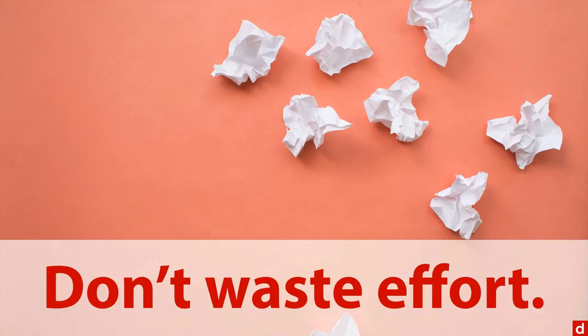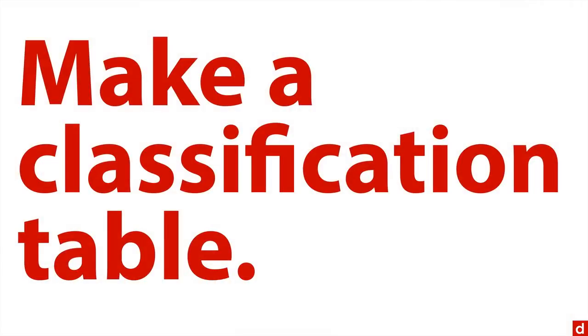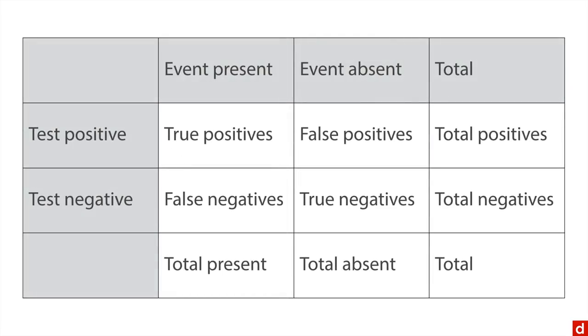One way of doing this in a very quantitative fashion is to make a classification table. So what that looks like is this: you talk about, for instance, positive results, negative results. And in fact, let's start by looking at the top here, the middle two columns.